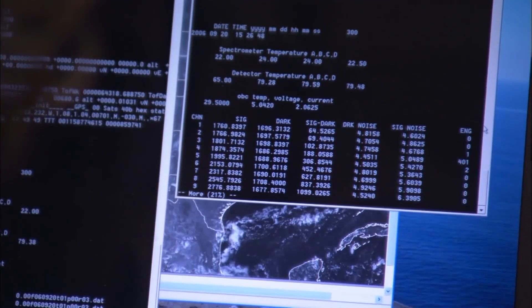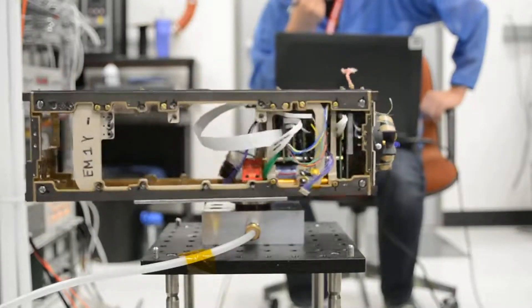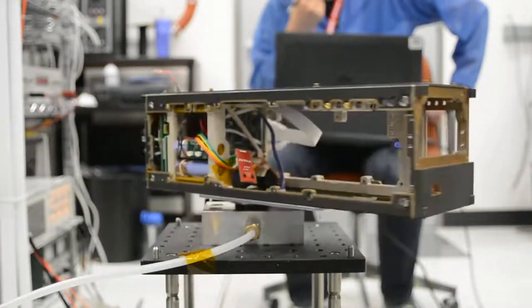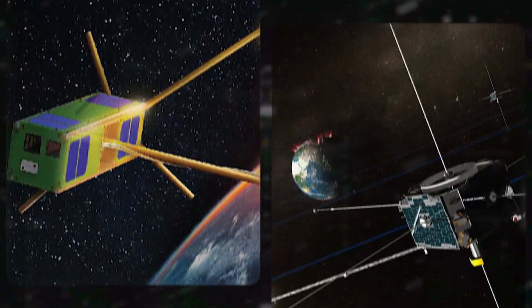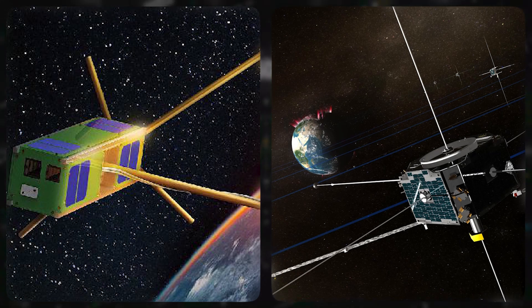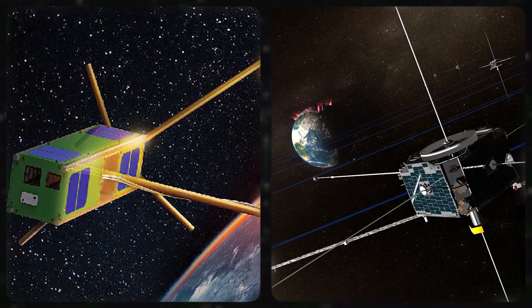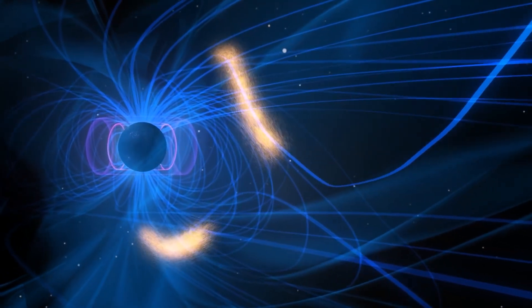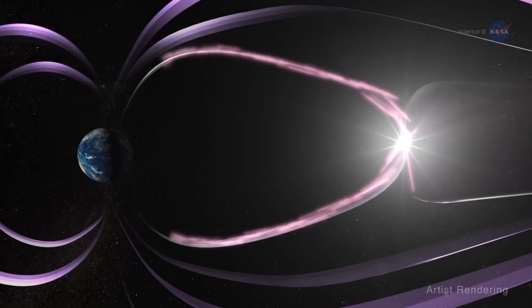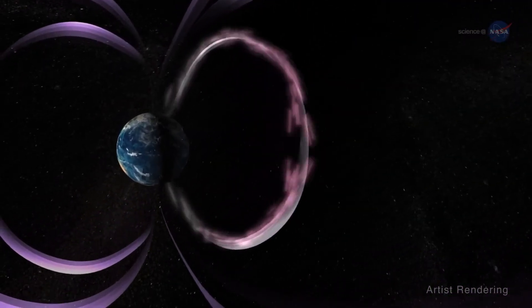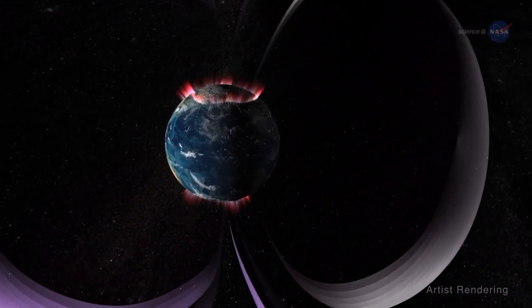To actually see this, scientists used data obtained from the ELFIN mission, the first pair of small satellites to measure these ultra-fast electrons, and combined them with data from NASA's Themis spacecraft. With these two, they were able to identify the electromagnetic waves to be Whistler waves. This ultra-fast electron rain has a terrible effect on our extremely important Earth's atmospheric chemistry.